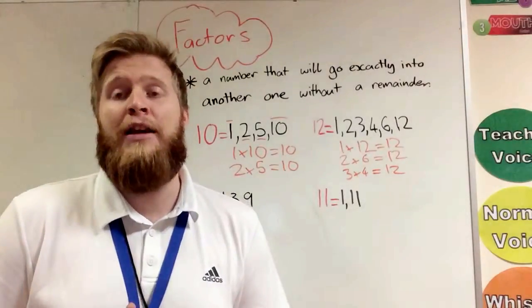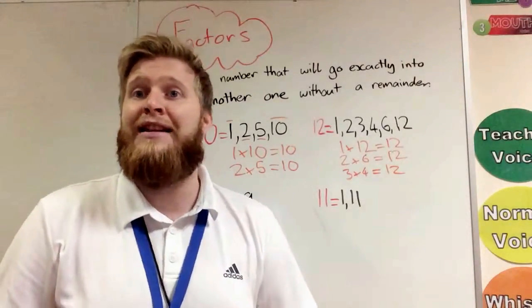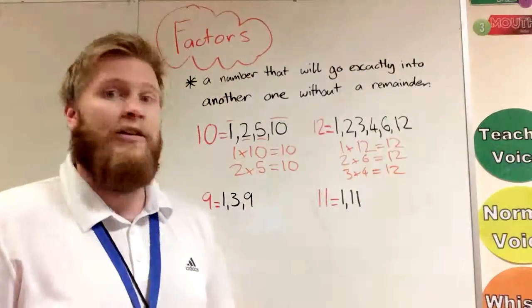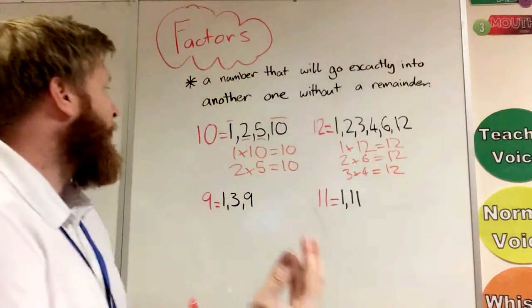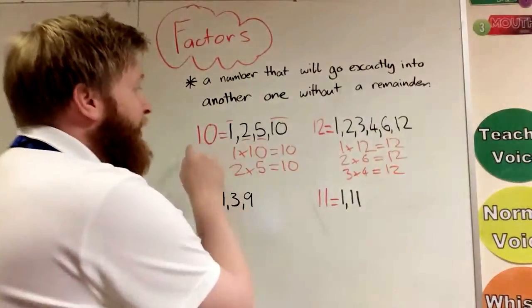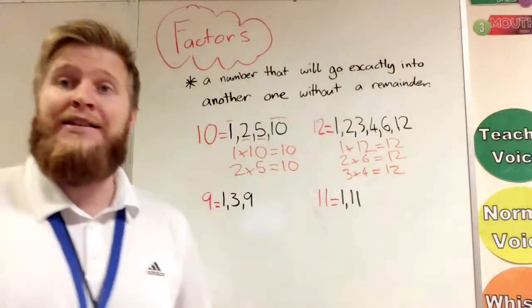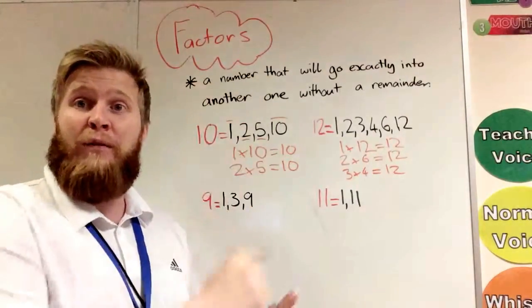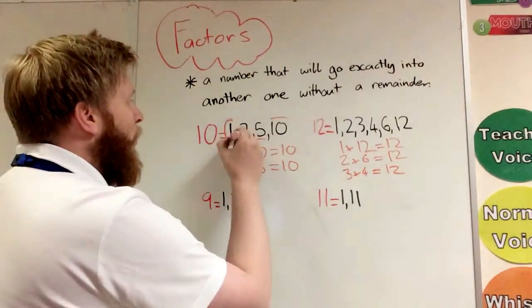Now what you might hear some people saying, or we might see some questions asking, is asking you to find common factors. A common factor is—you might see a question like write down the common factors of 10 and 12. What that basically means is numbers that are factors for both of them.